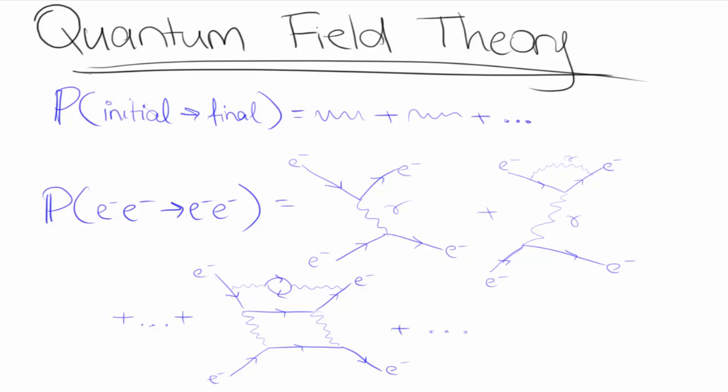For the electromagnetic and weak interactions, the simplest diagrams contribute the most to these calculations, so we only need to concern ourselves with the diagrams that have the fewest vertices, which in general is a finite amount.